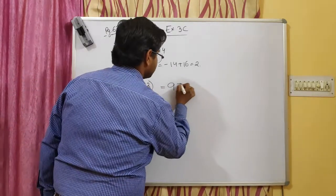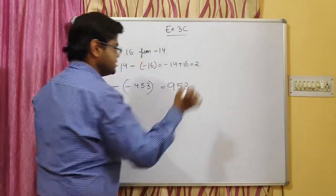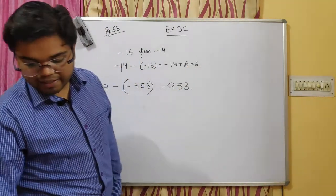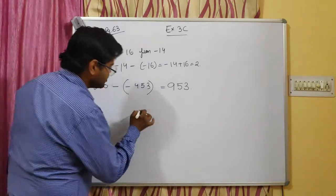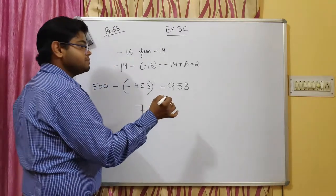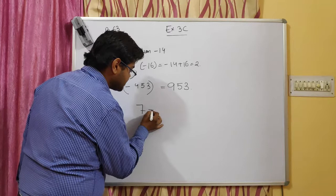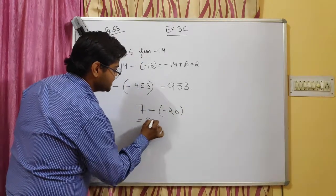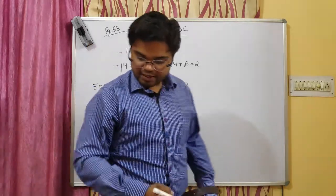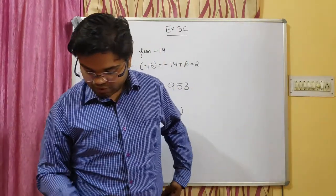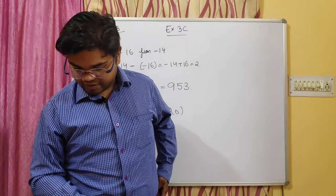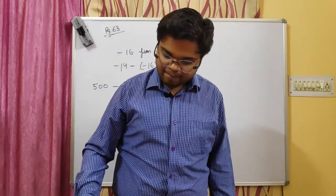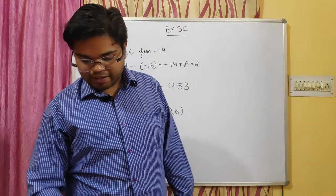Question four, first part: subtract minus 20 from 7. You write it as 7 minus of minus 20. The minus minus becomes plus, so it becomes 7 plus 20, which equals 27. Now question number 5: evaluate minus 3 minus minus 7 plus 11.